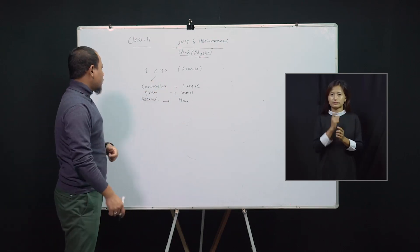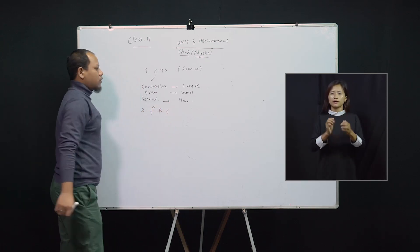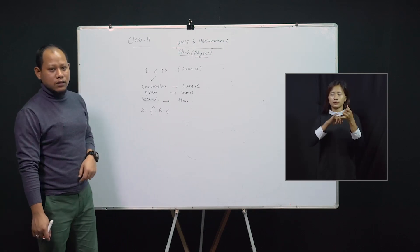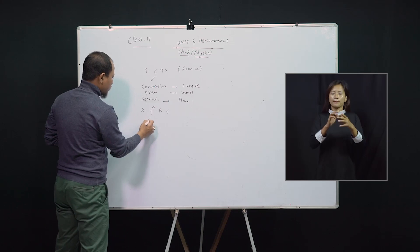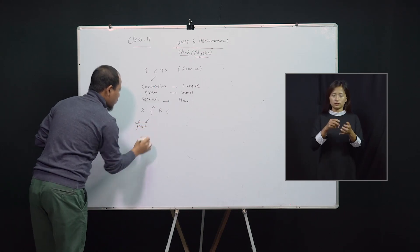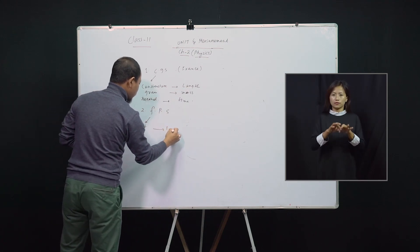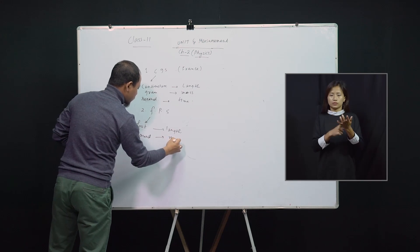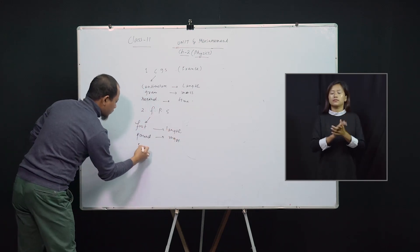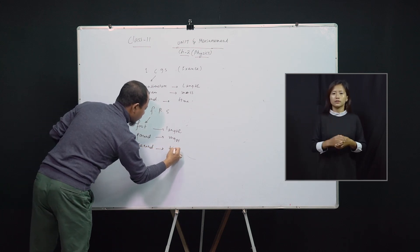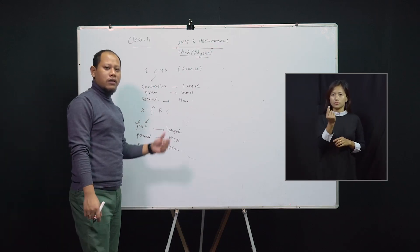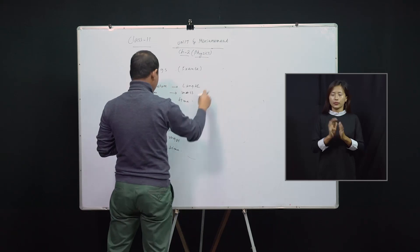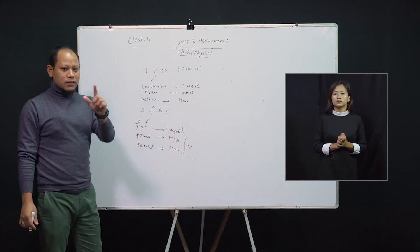The next system of units is FPS, which is the British system of units. F stands for foot, used for length; P stands for pound, used for mass; and S stands for second, used for time. This system is generally adopted in the UK. FPS is not a metric system of units.